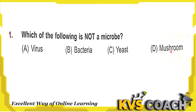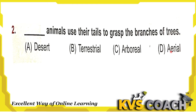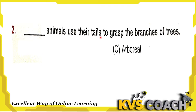So a microbe is not a mushroom. The right answer is option D. Next question: which animals use their tails to grasp the branches of trees? Desert animals live in desert areas. Terrestrial animals live on land. Arboreal animals live on trees and yes, they use their tails to grasp branches. Aerial animals are animals which can fly. So the right answer is option C — arboreal animals.